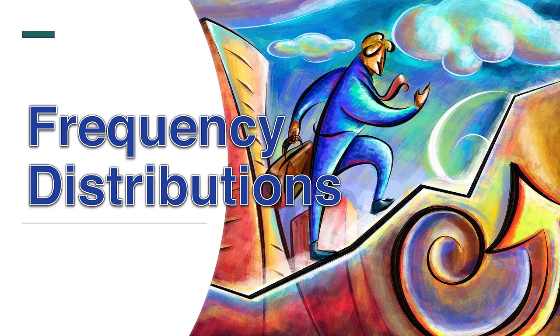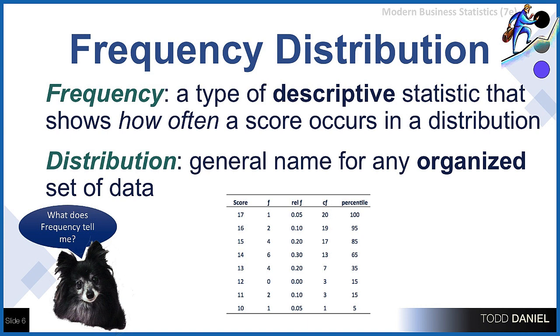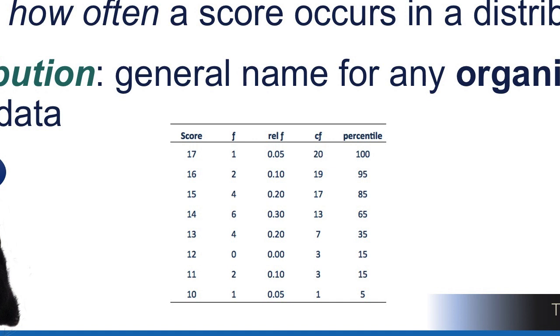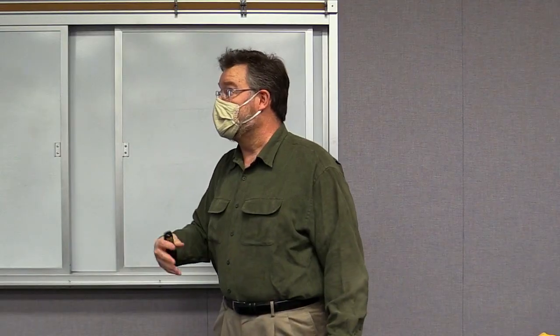What is a frequency distribution? Frequency is a descriptive statistic, and it tells us how often a score occurs in a distribution. How many times do we see that same score occurring? A distribution is just a general name that we use for an organized set of data. In this example, I have a frequency table. And you can see across the headers of that table, we have scores and the second column labeled with an F. That's simple frequency. If you wanted to know how many times does 17 occur in this data set, the frequency of 17 is 1. There is 1 score of 17 in this distribution. There are 2 scores of 16, and there are 6 scores for 14. That's simple frequency.